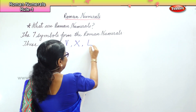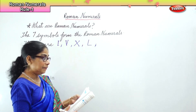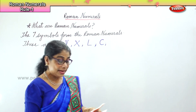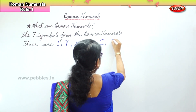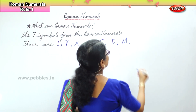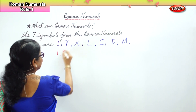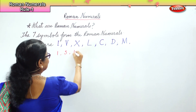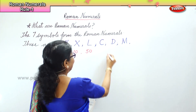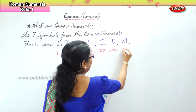Fifty — that's the shape of L. Then we have C, that's one hundred. Then we have D, that is five hundred. And then you have the letter M, that is one thousand. So: one, five, ten, fifty — that's L-shape — then C for one hundred, D for five hundred, and finally M for one thousand.